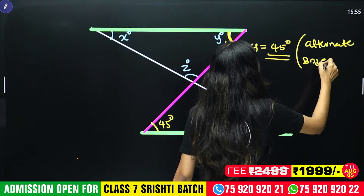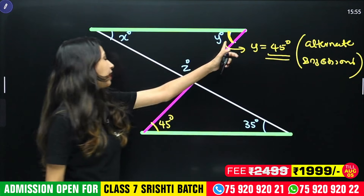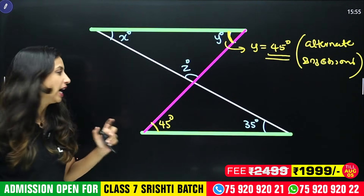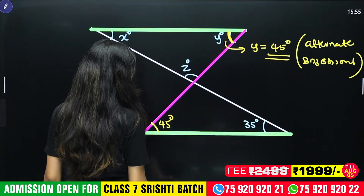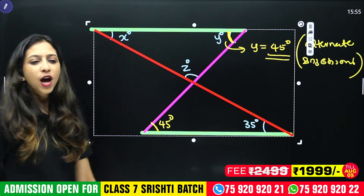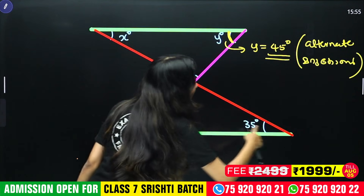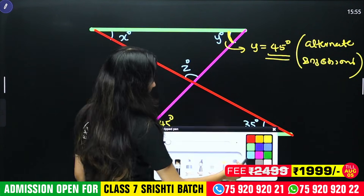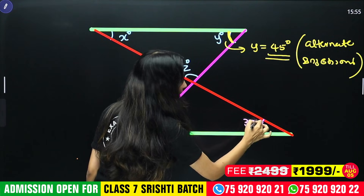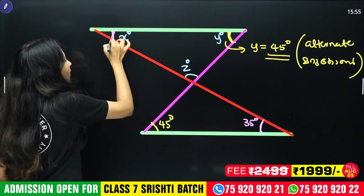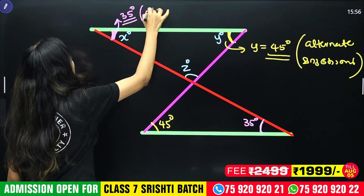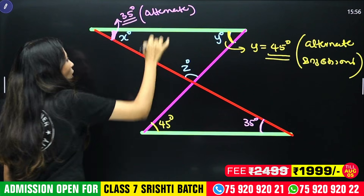Alternate angle — it is the alternate interior angle. This one is inside, and here there is 45. Here, there is a Z-shape. If you look at these two parallel lines, you can see the red color lines. Now, if you look at 35 degrees, you can see that 35 is the alternate angle. We have 35 degrees and we have 35 degrees. This is the reason for alternate angles.